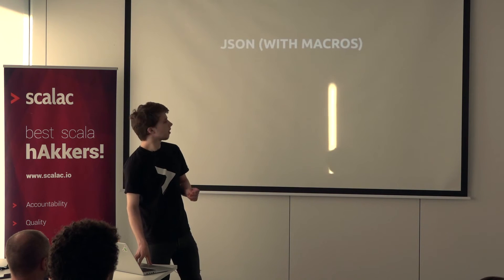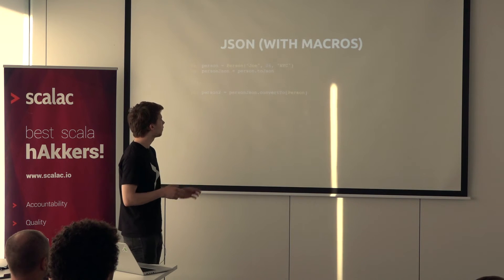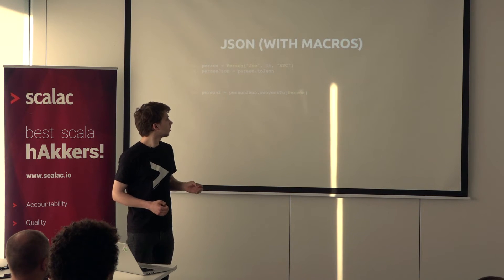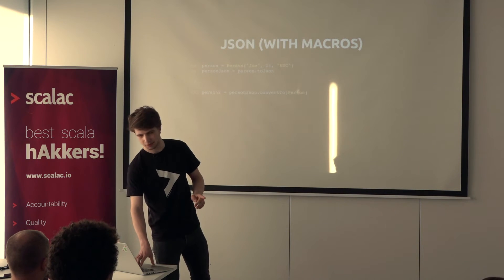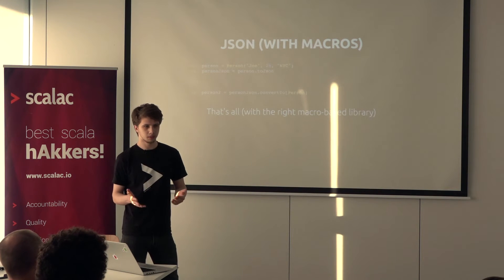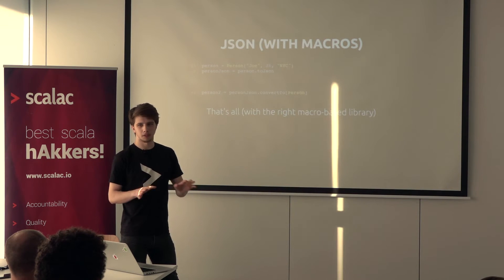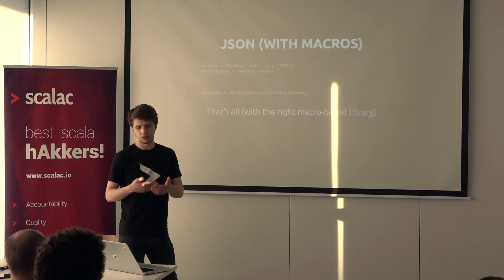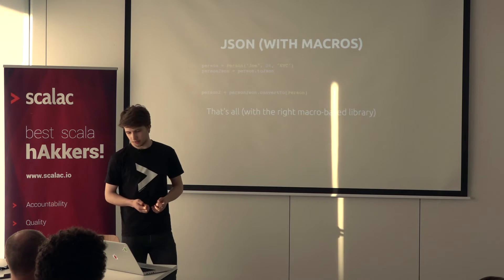With macros, we might do it way easier. Imagine we just create a Person and convert it to JSON, then use that JSON to convert it back to a Person — and that's all. We don't need to write toJSON or fromJSON implementations at all. If you're using the right macro-based library — and there are plenty of them — we can just do this. Without any reflection at runtime, we're going to be able to serialize and deserialize our class. This is pretty cool.